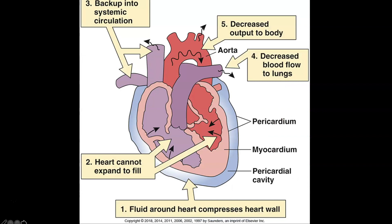When fluid starts to build up in pericarditis, these are numbered one to five so you can follow through what happens physiologically. Fluid builds up around the heart and compresses the heart wall. The heart can't expand to fill, so we have inadequate filling — similar to diastolic heart failure. This causes decreased cardiac output, backup into the systemic circulation, decreased blood flow to the lungs, and ultimately the patient can develop shock and go into cardiac arrest.